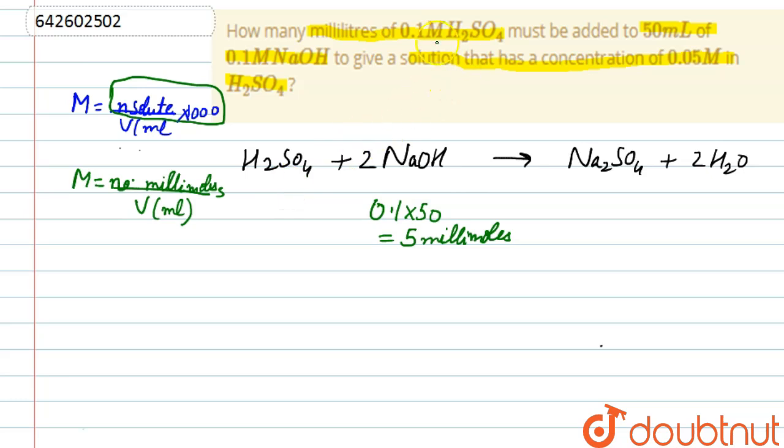And we don't know the volume of solution of H2SO4, so let us suppose the volume be V. So it will be 0.1, that is the concentration of H2SO4 into V. This much of millimoles, 0.1V millimoles. Now we know according to stoichiometry.